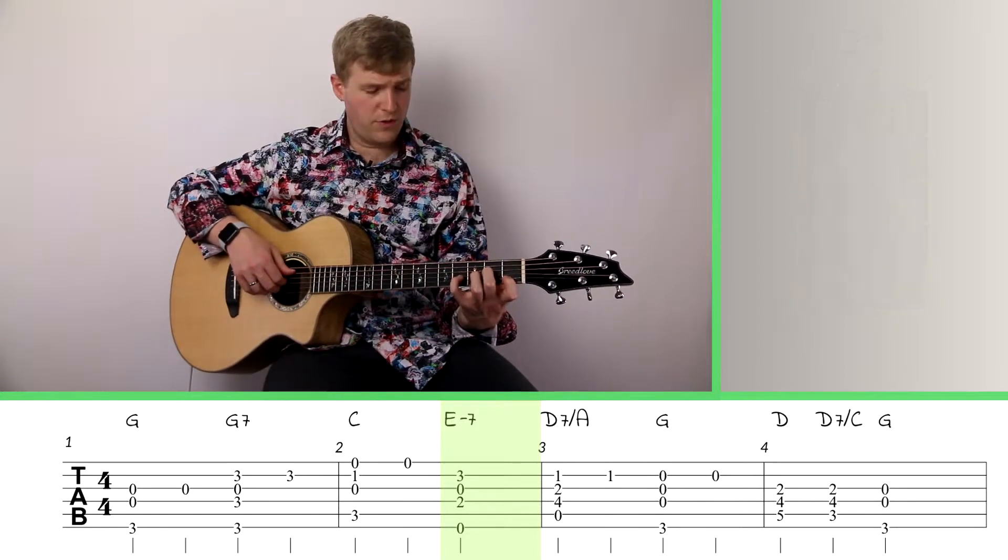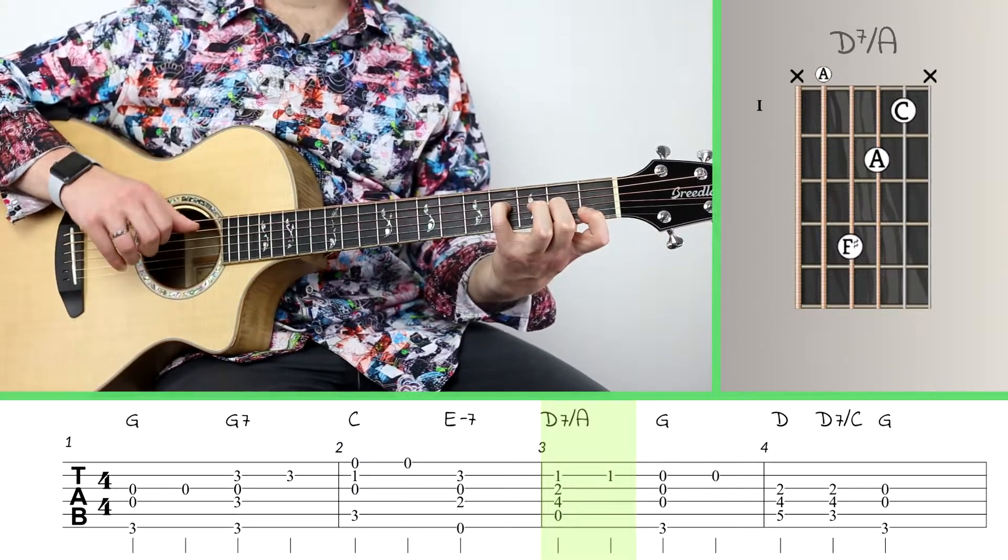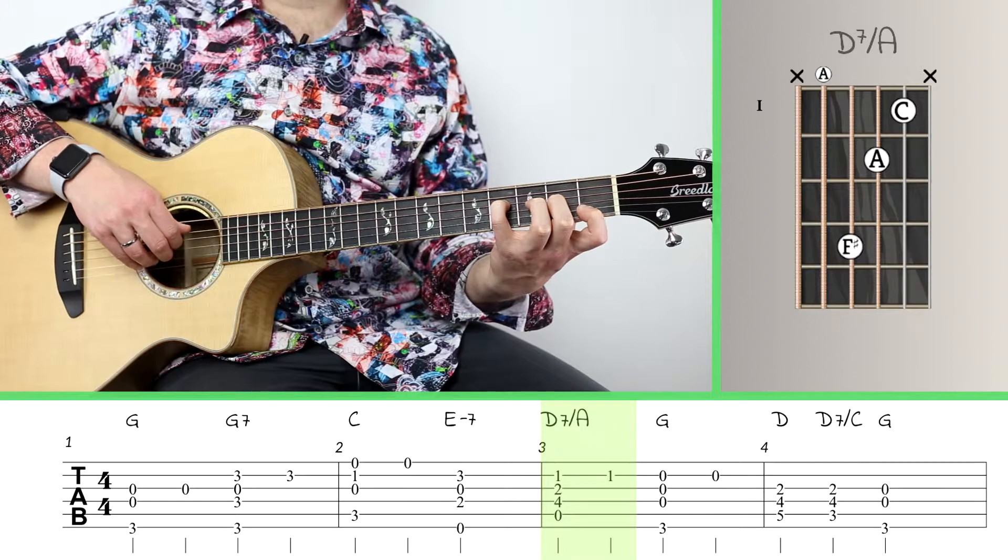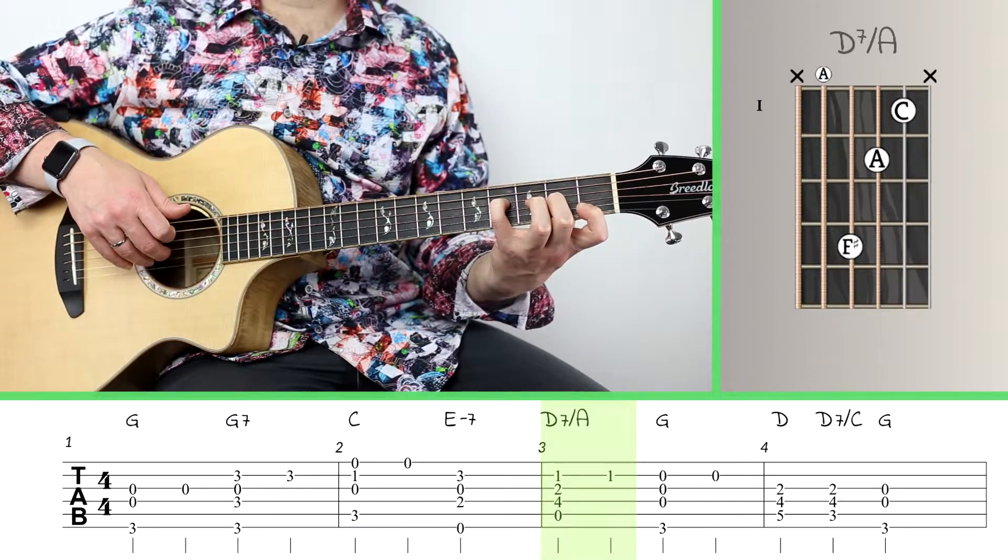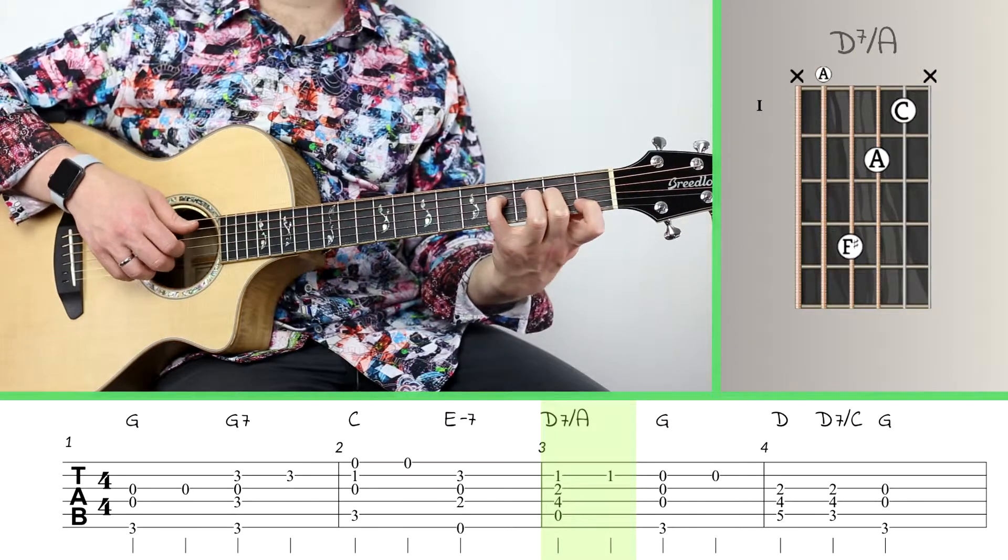On the third measure, we're going to an interesting voicing of the D7 chord, which has an A in the bass. This is actually a D7 chord with an A in the bass. Then you've got F sharp here, and A on the second fret of the third string, and C on the first fret of the second string.